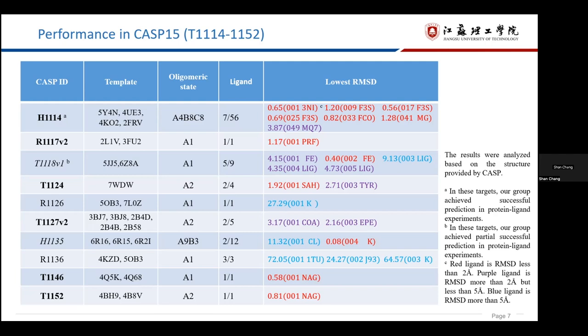There are two RNA systems that we failed. We used the server-predicted RNA structures provided by CASP. However, the RMSD of predicted structure is far away from the experimental structure. So, the incorrect receptor structure led to the failure of ligand prediction.